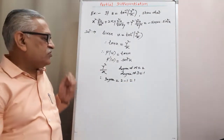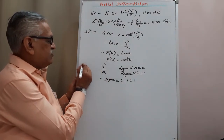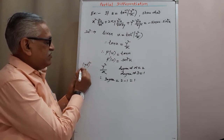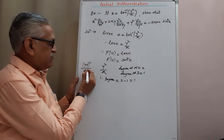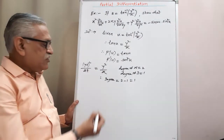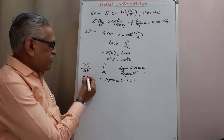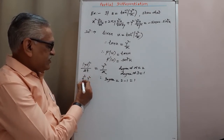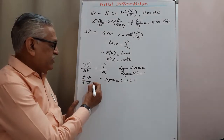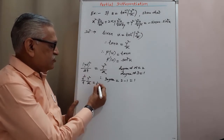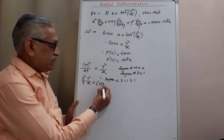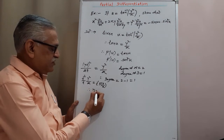By the second way, we replace y by yt and x by xt. Then, taking t common from both numerator and denominator, we get t² · y² divided by t · x. Therefore, we get that as t¹ times some function of y/x, and therefore the degree of that function is 1.